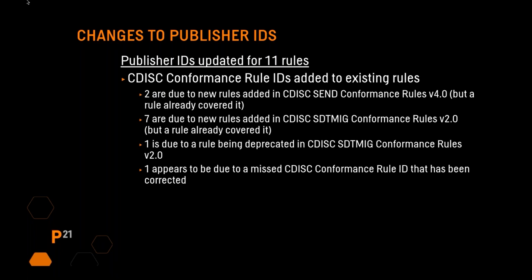There were some changes to publisher ID for 11 rules — we added CDISC conformance rule IDs to existing rules. Two are due to new rules added in CDISC SEND conformance rules version 4.0 where a rule already existed that covered this, so the ID was added as a reference. The same situation applies to seven SDTM rules, where SDTM IG conformance rules 2.0 added new rules but existing rules already covered them, so we just added the publisher ID. One is due to a rule being deprecated in CDISC SDTM IG conformance rules version 2.0, and one appears to have been a mistake — a missed conformance rule ID — which has been corrected.